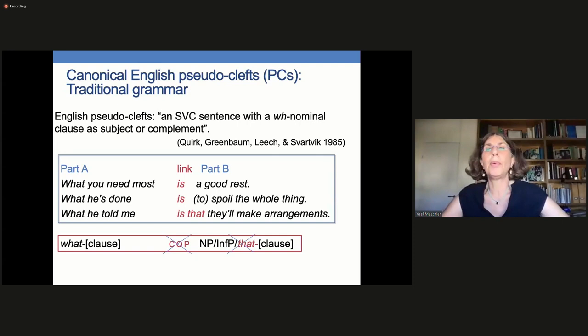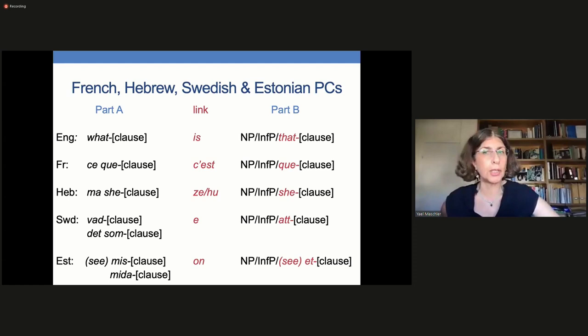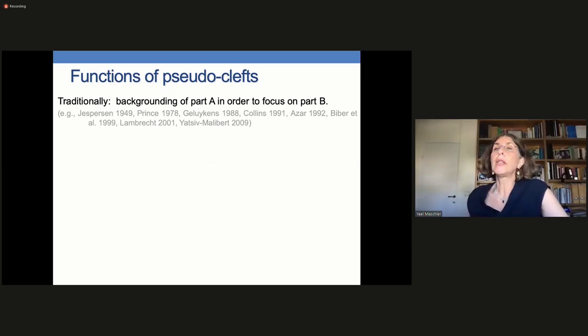After presenting the pseudo-cleft structures in the four languages in a very quick partial literature review, I'll say a few words about our databases. I'll then talk about the formal patterning of these structures in our data, particularly with regard to syntax and lexical semantics. Next, I'll analyze their initial part as a projecting construction based on the embodied conduct of the speaker and recipient. And finally, I'll conclude. Our methodology is that of interactional linguistics.